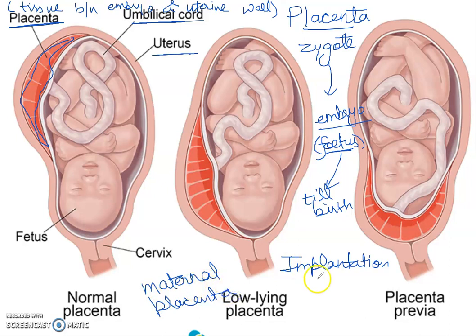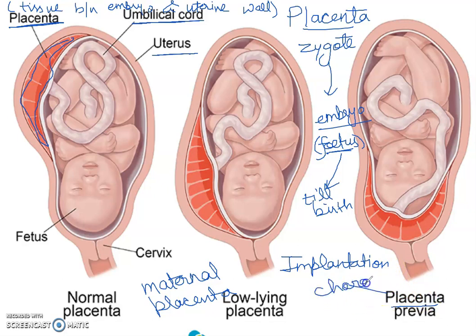The endometrial tissue undergoes changes and placenta consists of two parts: the fetal part, which is the chorion, and the maternal part, which is the decidua basalis. You have to remember this point — placenta consists of two parts: fetal part, that is chorion, and the second is decidua basalis.